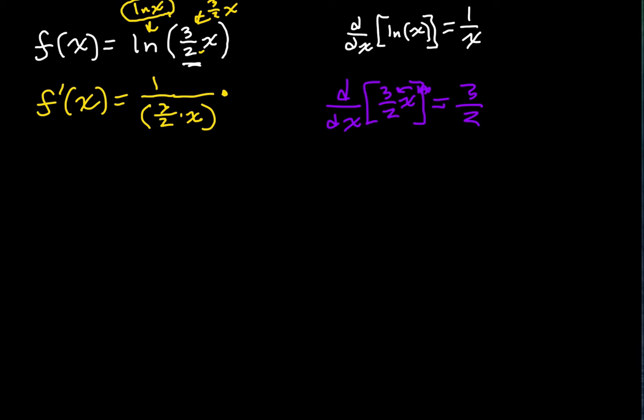So we're multiplying this by 3 over 2. Now, here's where it gets interesting. These 3 over 2s will cancel out. And so, after all, even though we went through all this work, we found that f prime of x is equal to 1 over x regardless.